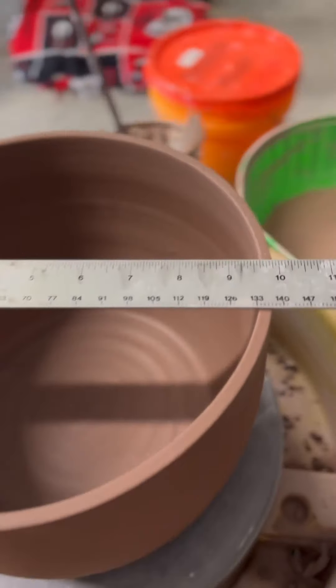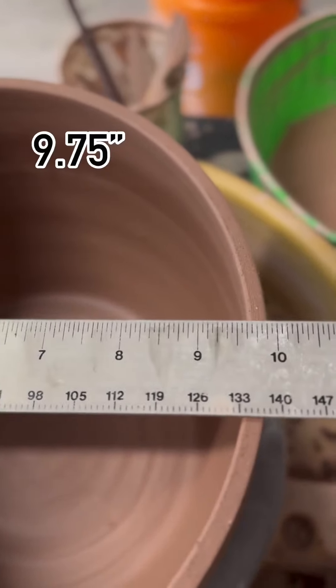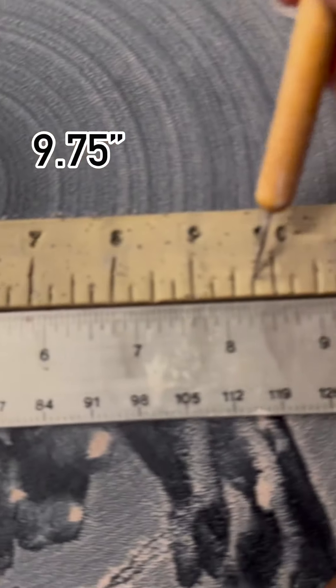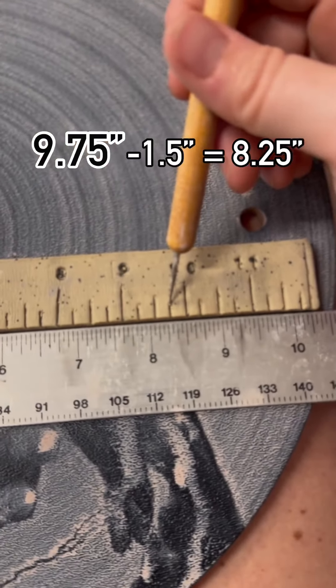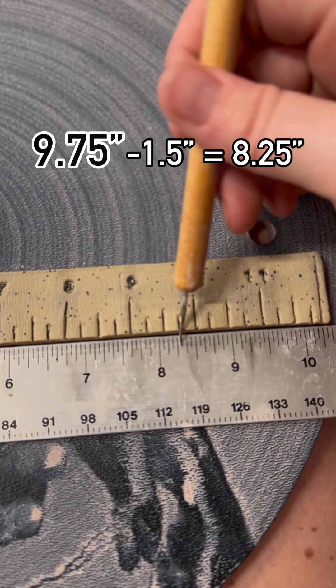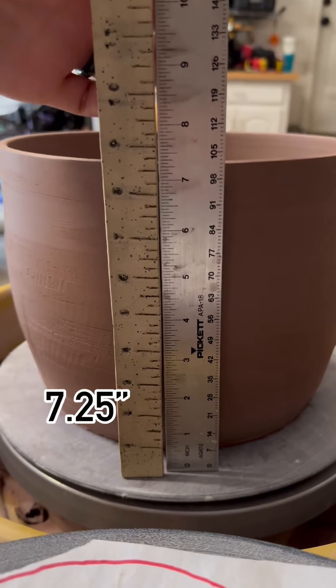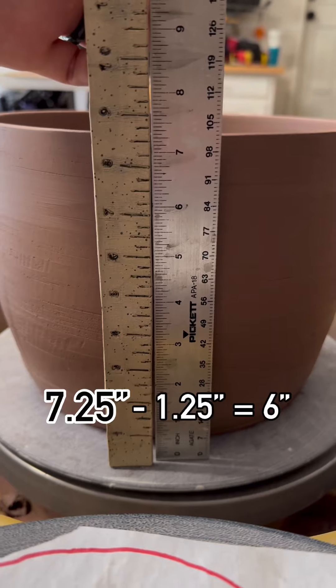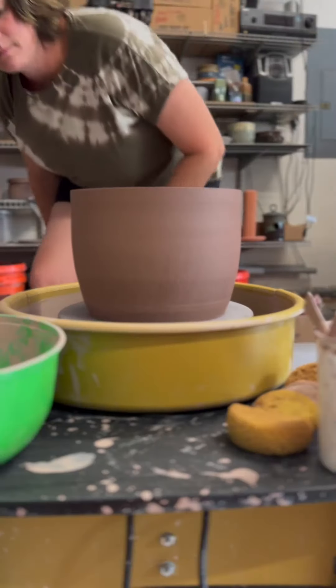If we look at my biggest pot, it is 9.75 inches wide, which is going to shrink down to eight and a quarter inches wide. This pot is seven and a quarter inches tall, but will shrink down to six inches tall.